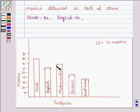Now we see the bar for mathematics and in mathematics he has scored 70 marks. In science he has scored 50 marks, and in social science, he has scored 40 marks.